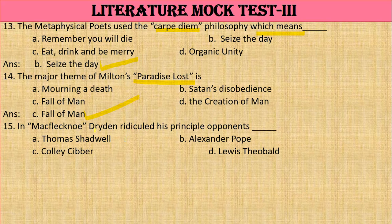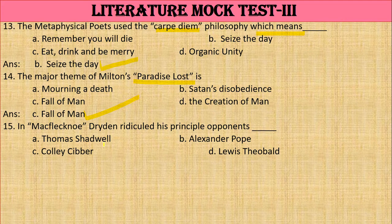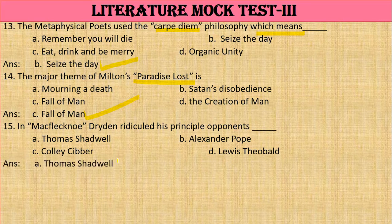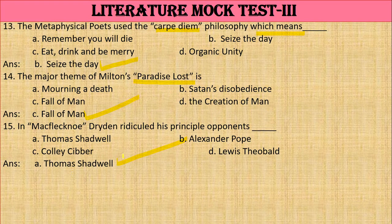Question 15: In 'Mac Flecknoe', Dryden ridiculed his principal opponent. Options: Thomas Shadwell, Alexander Pope, Colley Cibber, or Theobald. The right answer is Thomas Shadwell. In 'Mac Flecknoe', John Dryden attacked Thomas Shadwell, who was his principal opponent in English literature.